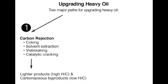Similarly, in visbreaking and catalytic cracking processes, carbon is rejected in the reactor tubes or on catalyst surfaces, so that the remaining product is much lighter, or has a higher hydrogen-to-carbon ratio — which is essentially the upgrading process. Through carbon rejection, we produce lighter products with high hydrogen-to-carbon ratio, such as light distillates or middle distillates, and carbonaceous or carbon-rich byproducts with low hydrogen-to-carbon ratio.